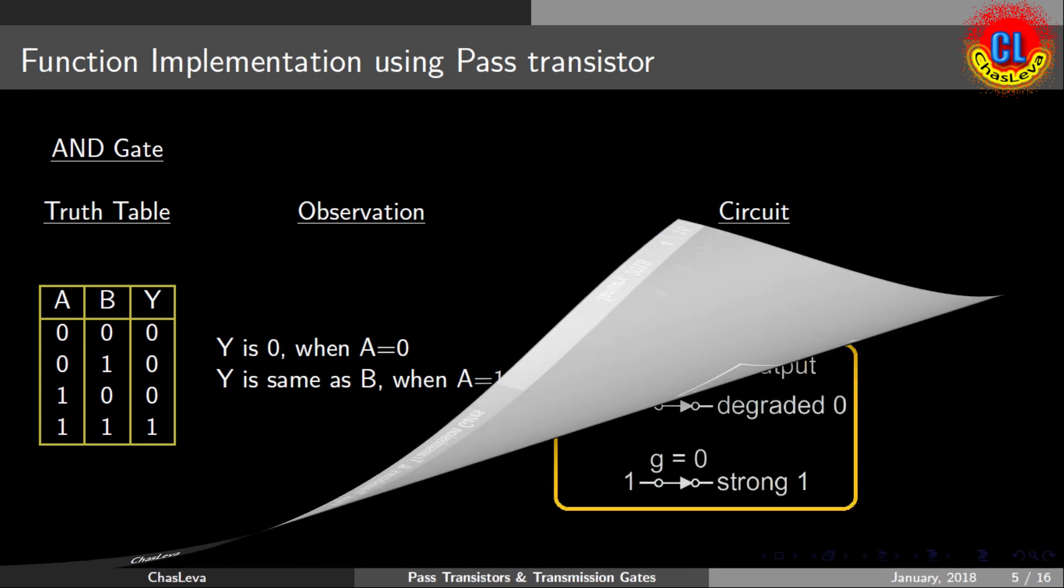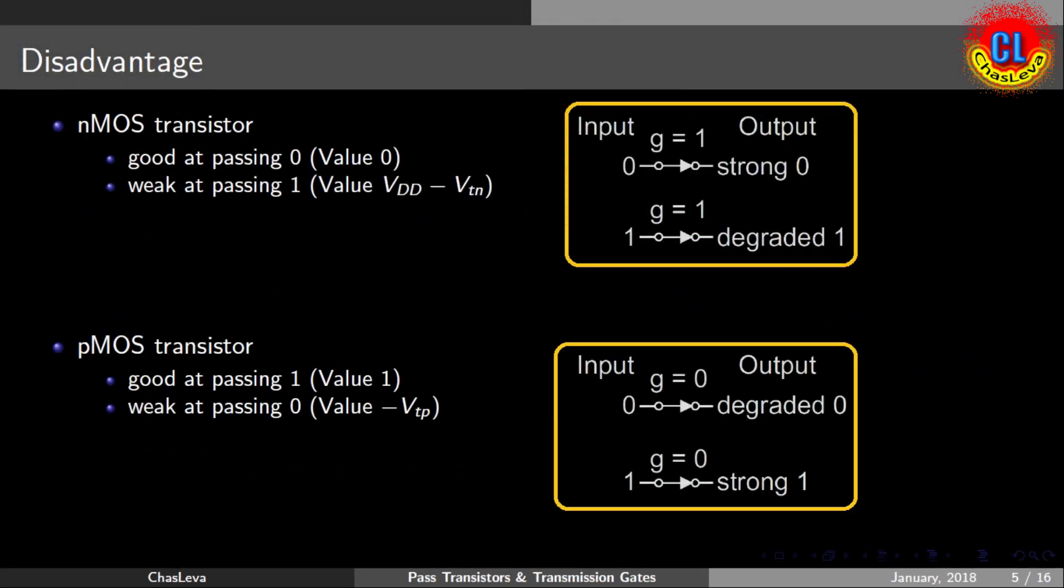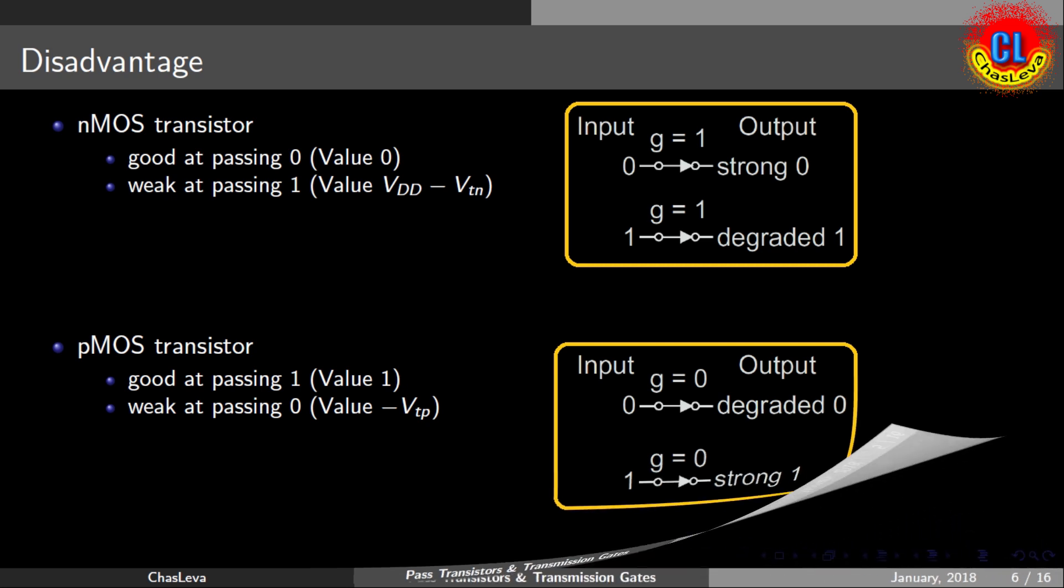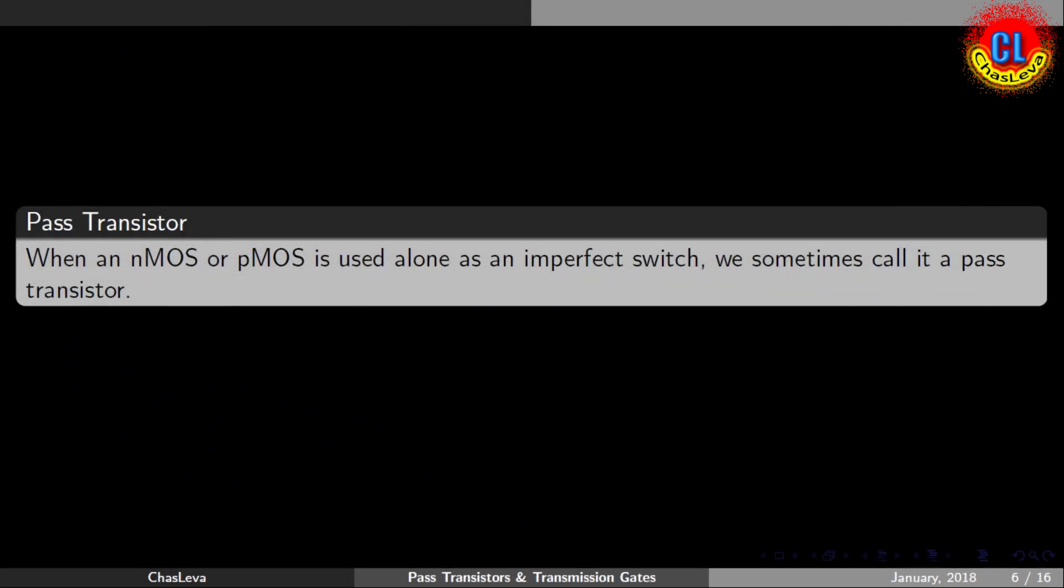NMOS pass transistor has some disadvantages. If we consider an NMOS transistor, it's good at passing zero but poor at passing one because of the threshold drop. The value is VDD minus VTN. Next, if we consider PMOS transistor, it's good at passing one but poor at passing zero due to the threshold drop. The value will be around VTP.